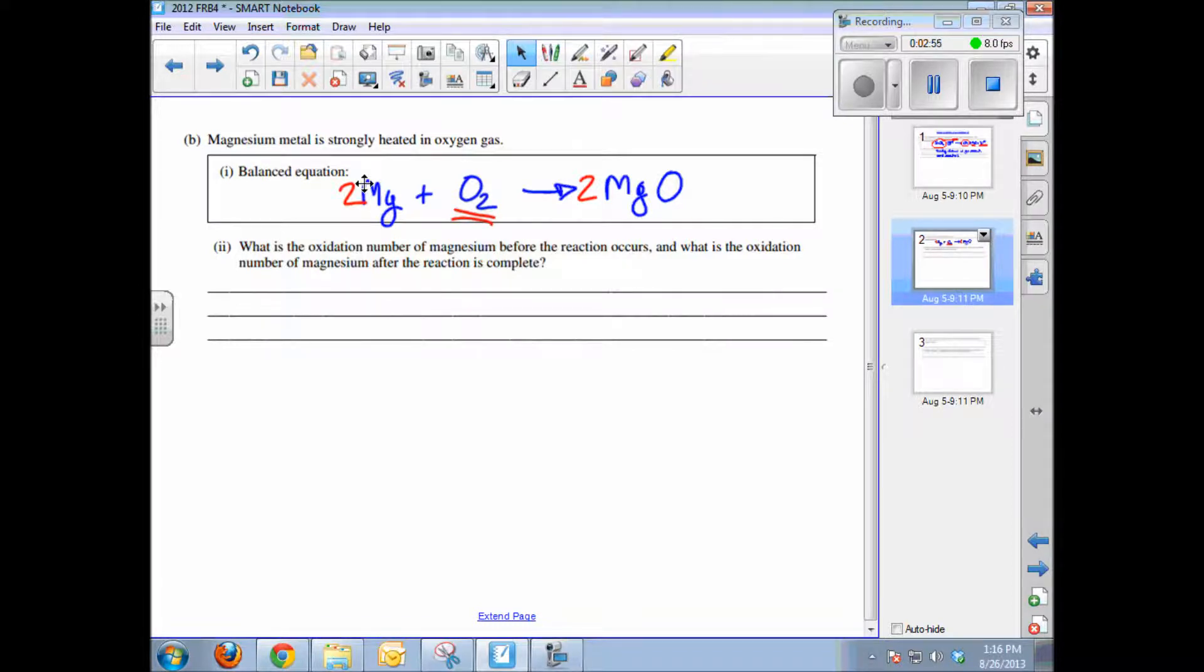We've already actually answered the second question: what's the oxidation number of magnesium before and after the reaction? Well, before, magnesium is in its elemental state so it has an oxidation state of zero. After, magnesium is a 2 plus.